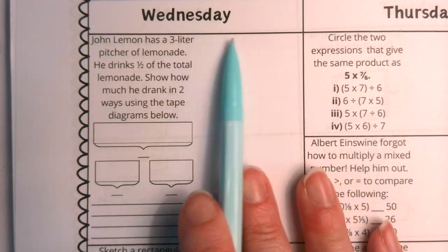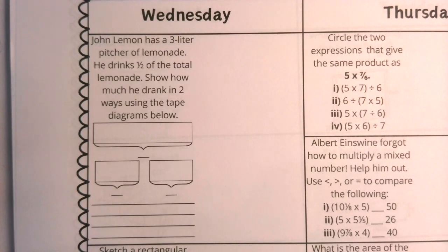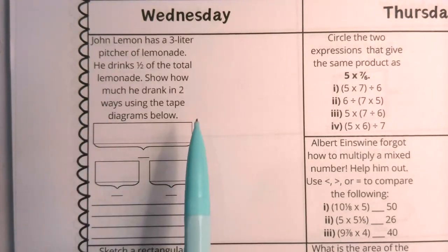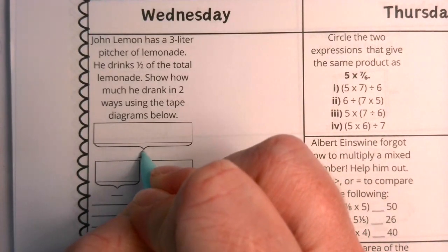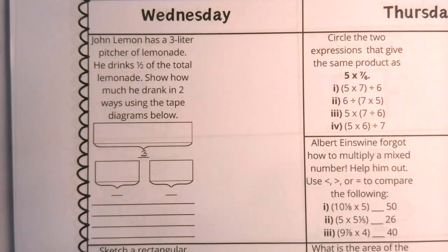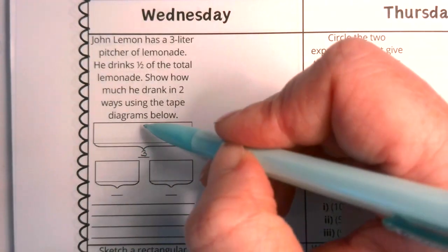Good morning mathematicians, we're looking at Wednesday of week's line and we're going to start off with some tape diagrams. This says John Lemon has a three-liter pitcher of lemonade; he drinks half of the total lemonade. Show how much he drank in two ways using the tape diagrams below. So the entire amount of lemonade that he had to drink was three liters, so I'm going to label this top one as three because this represents the entire quantity of lemonade.